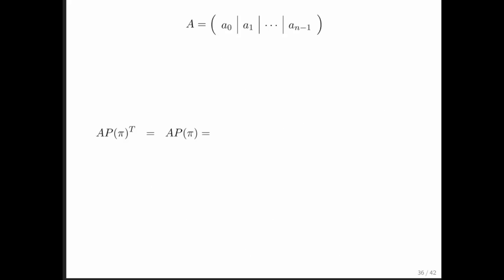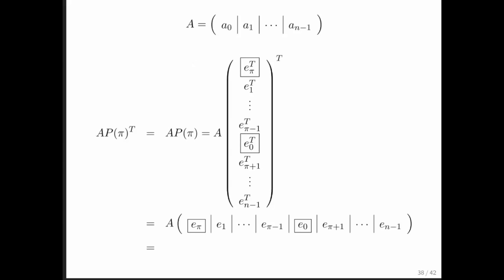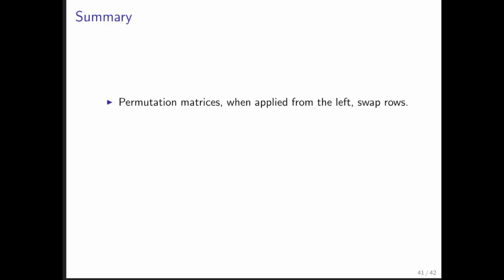What happens when you apply a permutation matrix from the right? Well, you can probably guess. What happens is that the column indexed with 0 is swapped with the column indexed with pi. So, in summary, permutation matrices when applied from the left, simply swap rows. Permutation matrices when applied from the right, swap columns.